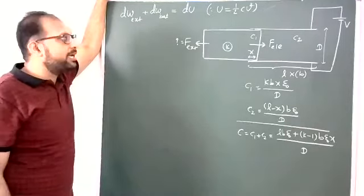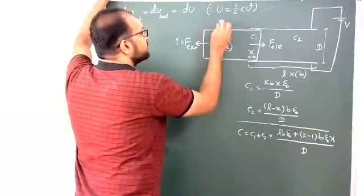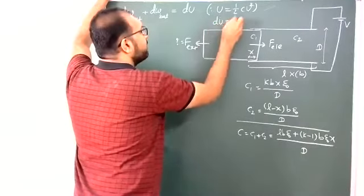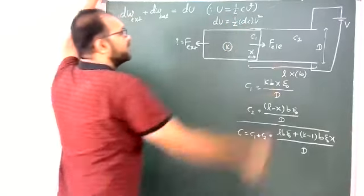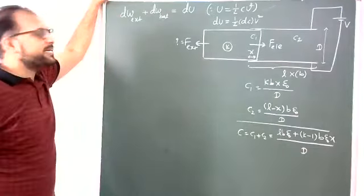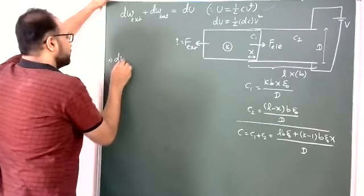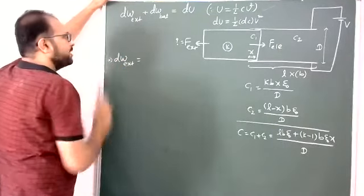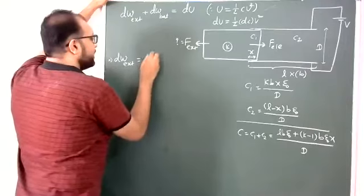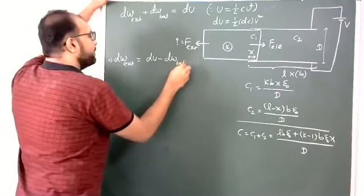That's why we can't write Q²/2C here. So U equals half CV², and dU equals half dC times V². That is the change in potential energy.